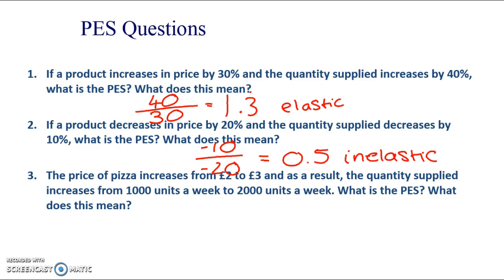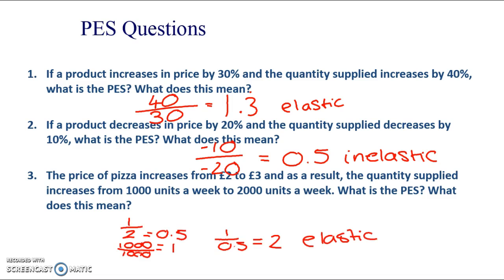The third question requires working out the percentages yourself. The price of pizza increases from £2 to £3, so the percentage change is 1 over 2, which is 50%. The quantity supplied increases from 1,000 to 2,000 units a week — that's 1,000 over 1,000, a 100% increase. Putting that into the equation — percentage change in quantity supplied over percentage change in price — we get 1 over 0.5, which equals 2, meaning it is elastic.